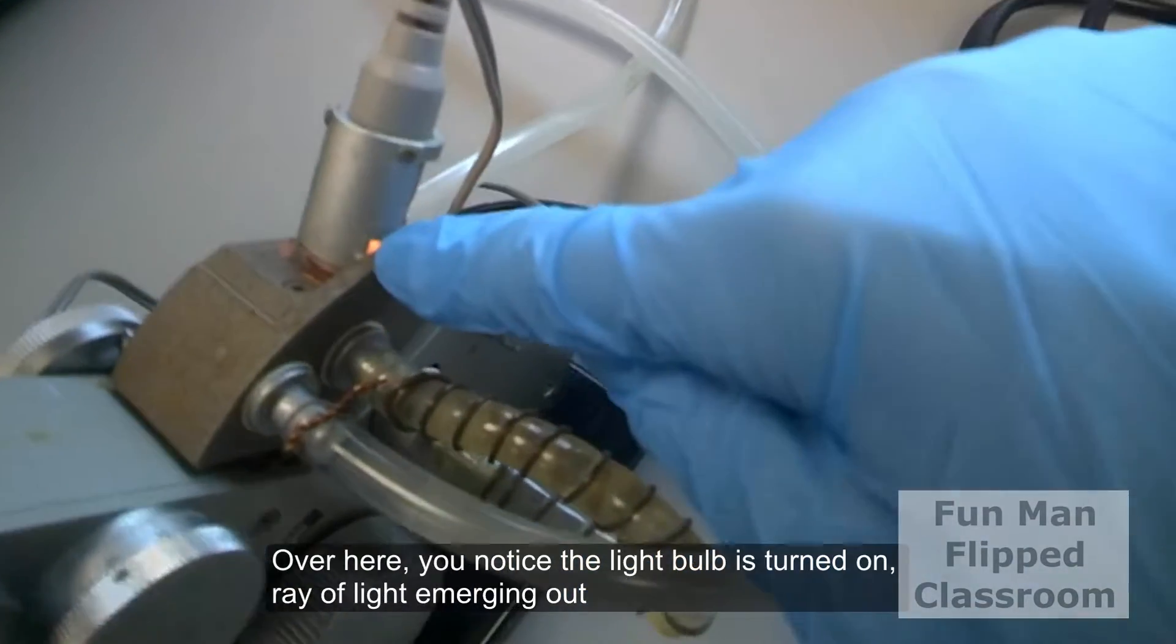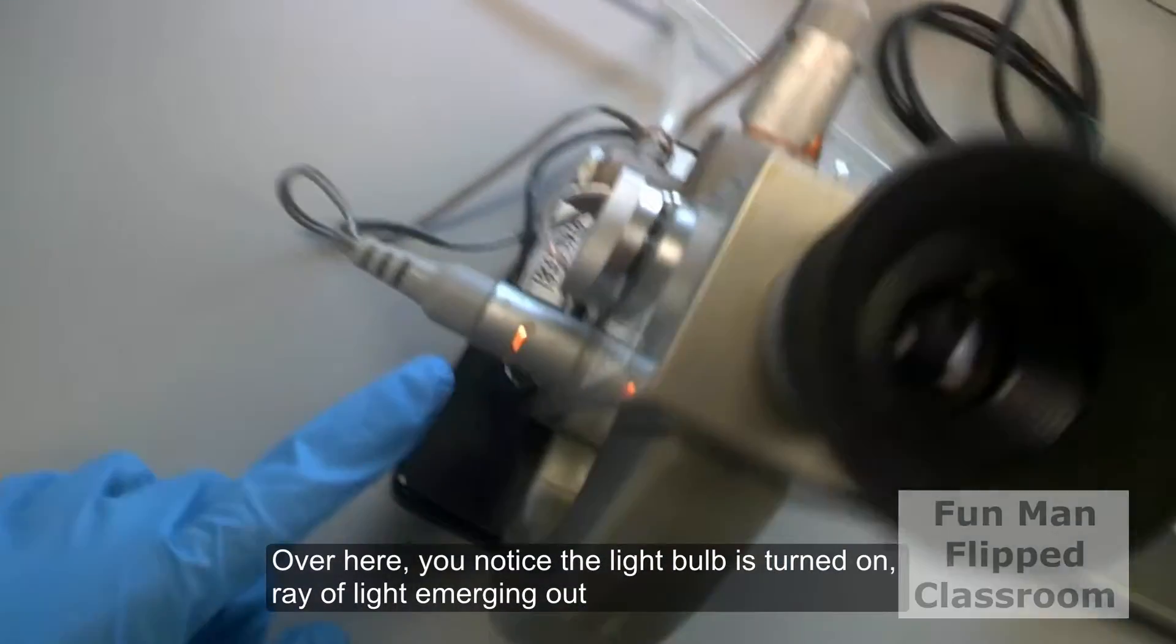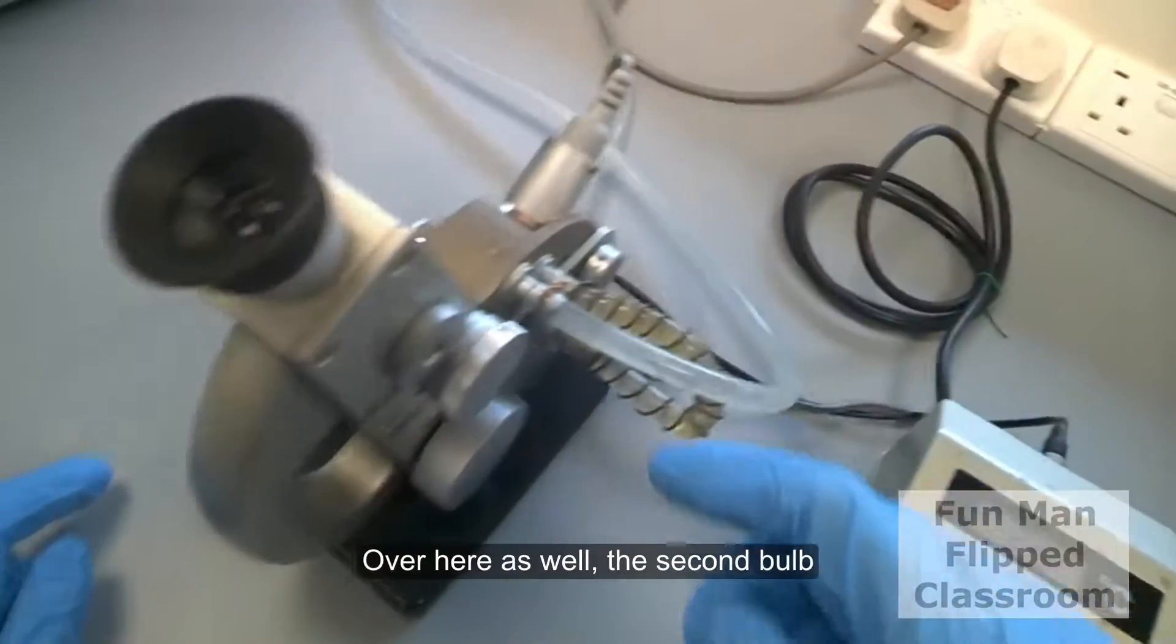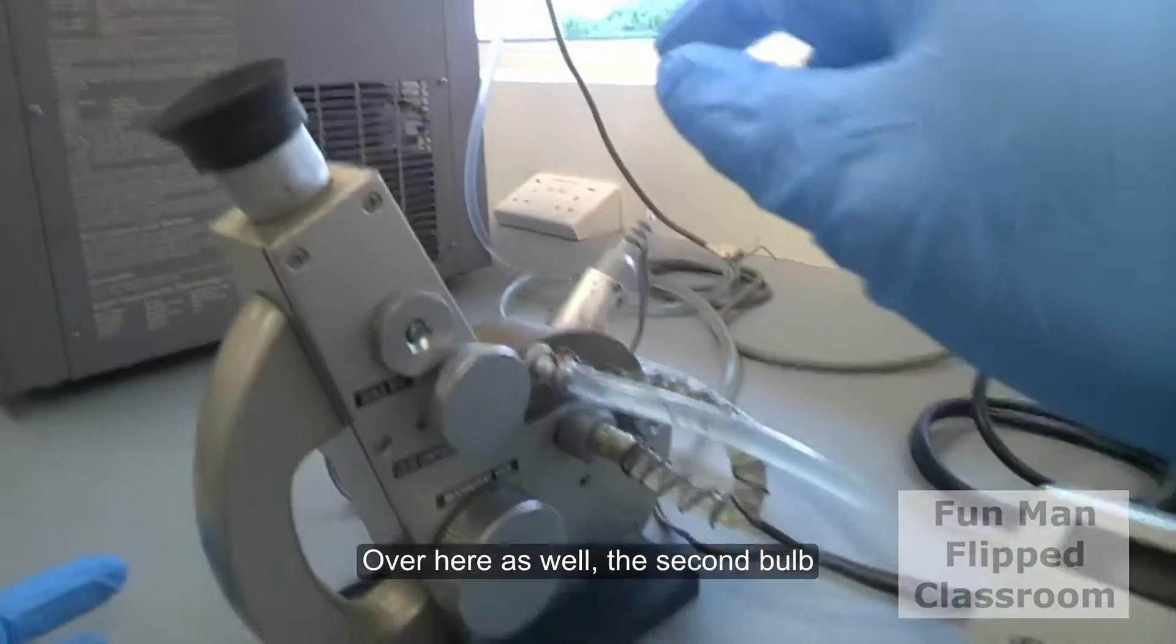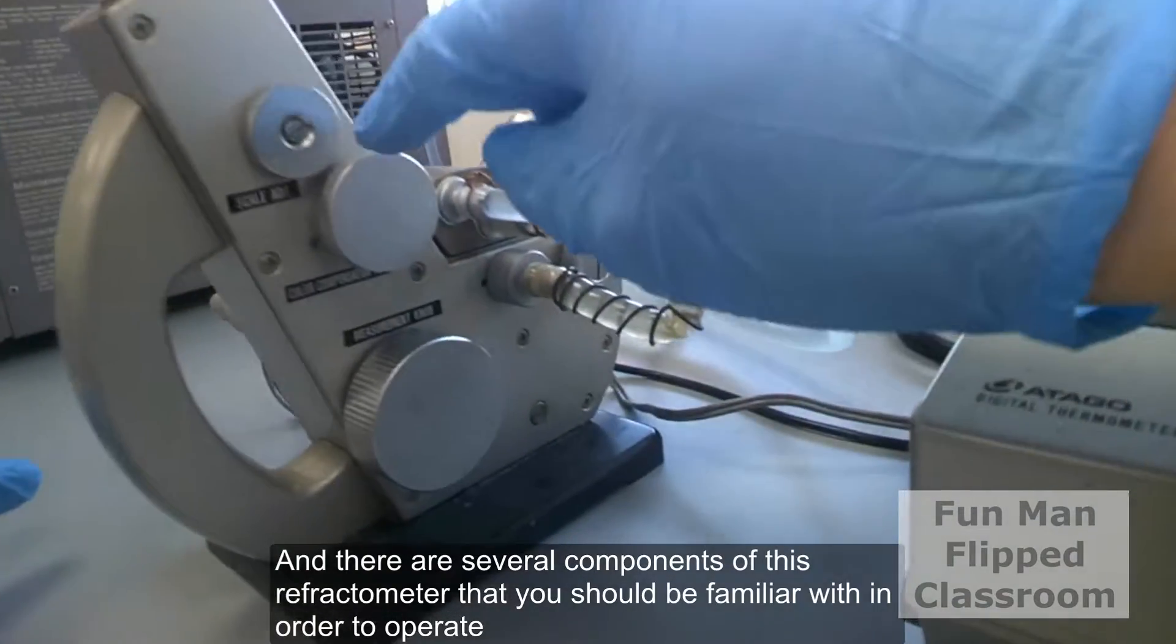And over here, you notice the light bulb is turned on, the ray of light emerging out. And over here as well, the second bulb. And there are several components of this refractometer that you should be familiar with in order to operate.